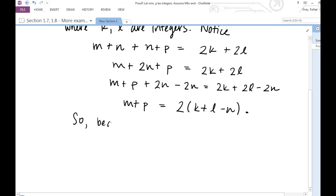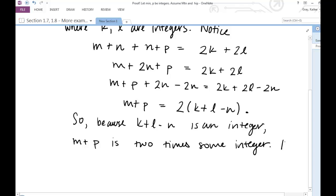So, because K plus L minus N is an integer, M plus P is 2 times some integer. Hence, by definition of even integers, M plus P is even. And that's it. So, we've made it clear that this is our conclusion.